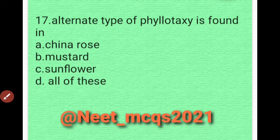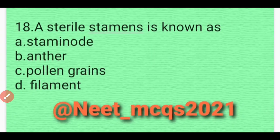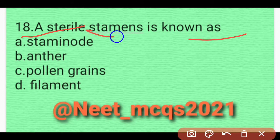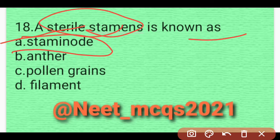Question 17: A sterile stamen is known as — it is basically known as a staminode. Option A is correct.